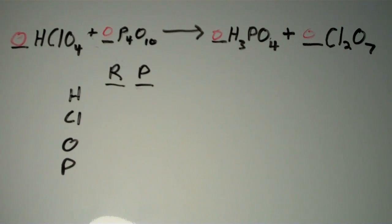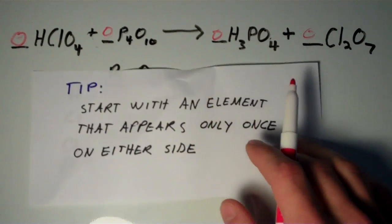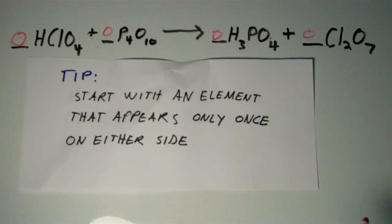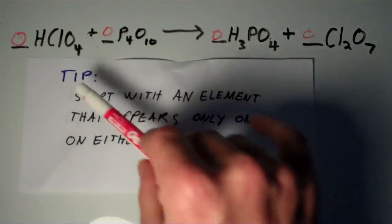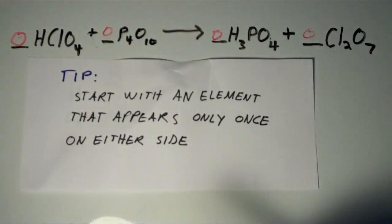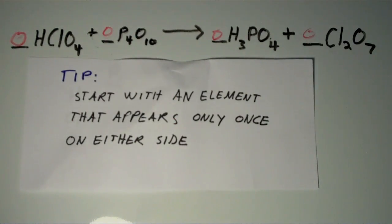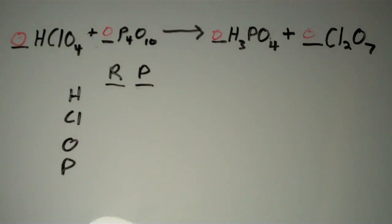Now we're going to choose an element to start with. And as in the last video you want to start with an element that appears only once on either side of the equation. So in this equation you could start with hydrogen or you could start with chlorine or you could even start with phosphorus. But don't start with oxygen because oxygen appears twice on both sides of the equation. So I'm just going to arbitrarily choose hydrogen to start with.